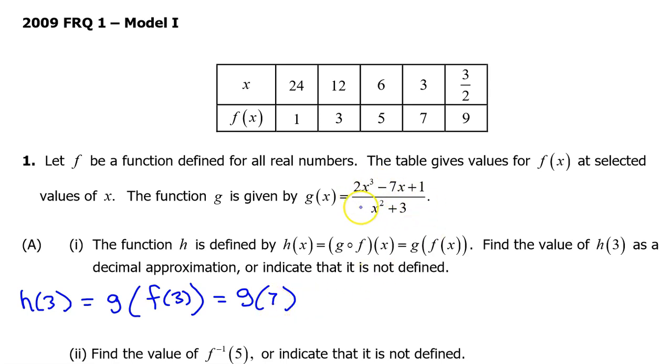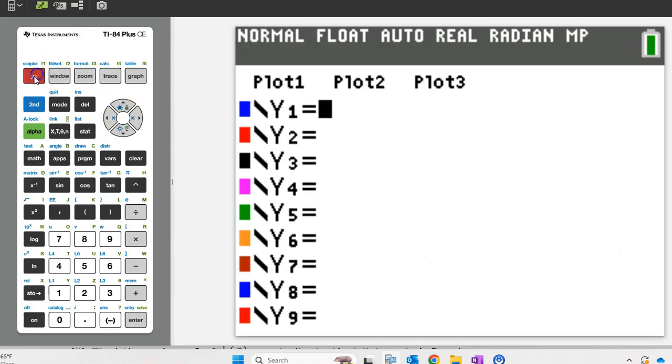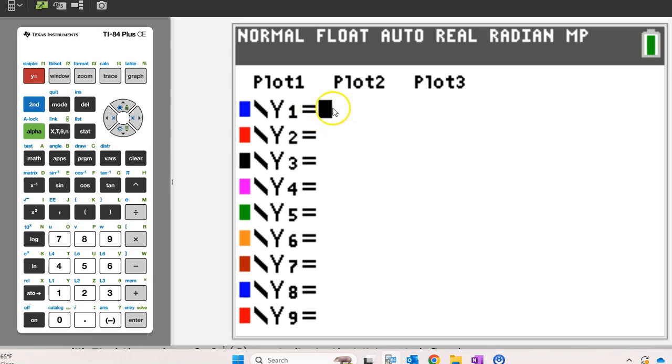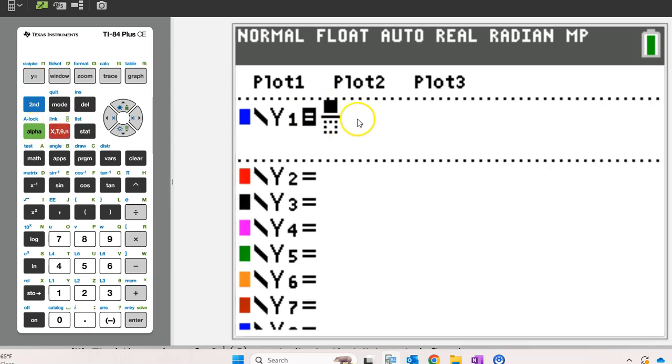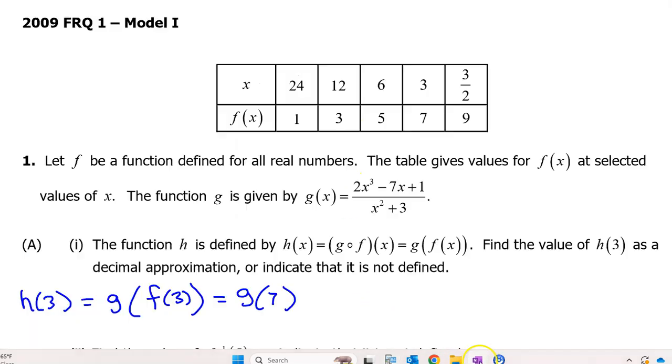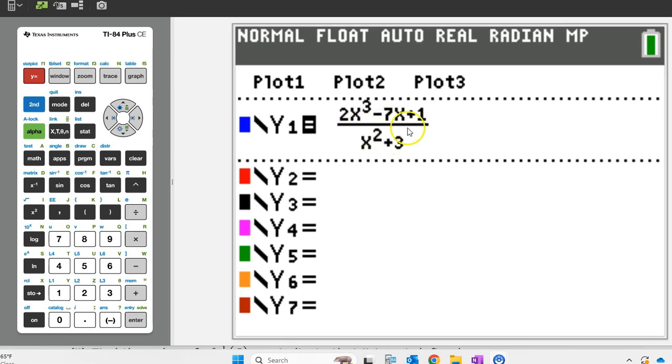We can use the graphing calculator to evaluate g at 7 easily if we enter g as y1. So go to your y equals and under y1, make a fraction by hitting alpha x. And now we're just going to enter this expression. Here is g of x entered as y1.